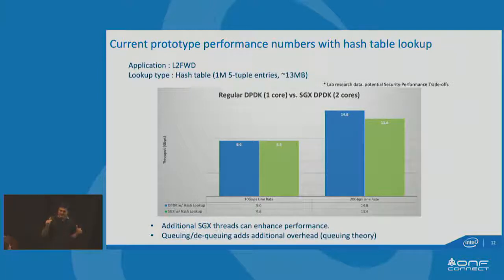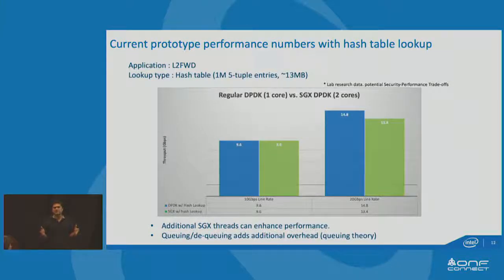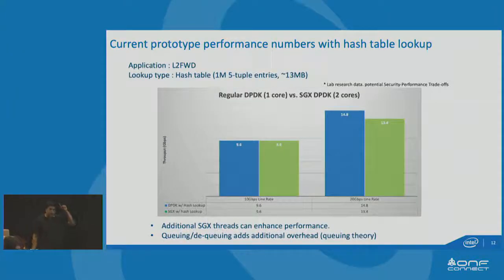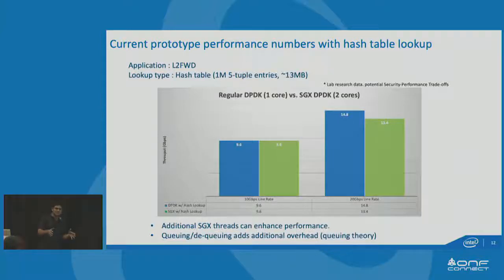Less than 10% is a sweet spot where you can tell someone: you're getting performance and security, and your overhead is less than 10% — and they'll say, okay, I can accept that. These are 64-byte packets. These are lab research numbers, but we also have real numbers running on the SP gateway plane, and we pretty much get 1.8 or 1.9 MPPS, versus the same implementation without SGX at 2 MPPS. So we are pretty close there as well.